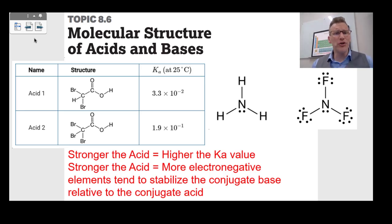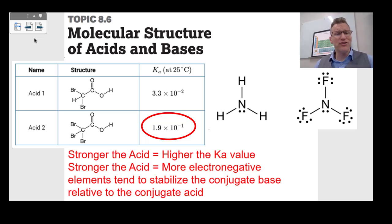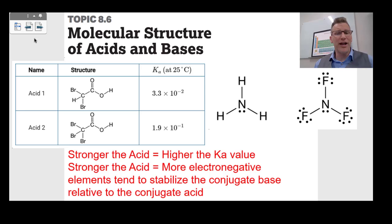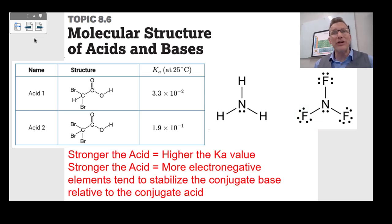Topic 8.6 deals with the molecular structure of acids and bases. The stronger the acid, the higher the Ka value. A Ka of 1.9×10⁻¹ is higher than 3.3×10⁻², so acid 2 is stronger. The key structural difference: bromine is bonded to the carbon instead of hydrogen, and bromine is more electronegative. More electronegative elements stabilize the conjugate base, making it a stronger acid. Similarly, NF₃ is a weaker base than NH₃ because fluorine's high electronegativity stabilizes the conjugate base and makes NF₃ a stronger acid — meaning it's a weaker base.